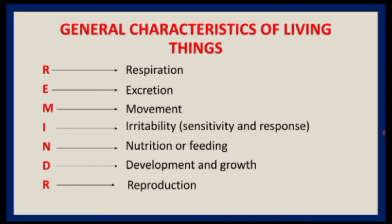Nutrition simply means taking in food to get the nutrients for the body to grow. Plants are self-feeding — they combine carbon dioxide and water in the presence of light and chlorophyll to make food through photosynthesis. Animals are other-feeding, that is heterotrophic — they depend on other organisms for food.